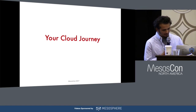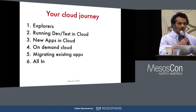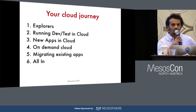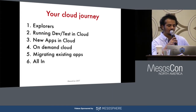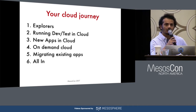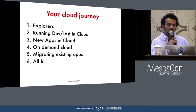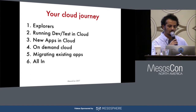Let's look at the cloud journey. People coming from the on-premise world are either an explorer, maybe running a network test workload in the cloud, or adding new apps to work in the cloud, or using some sort of cloud bursting — if they need more resources on the fly and dynamically, they use on-demand cloud.